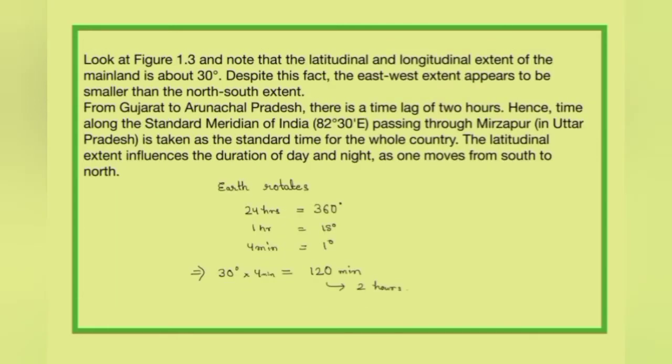Note that both the latitudinal and longitudinal extent of the mainland is about 30 degrees. India's latitudinal extent is from 8°4'N to 37°6'N — a difference of about 30 degrees. Similarly, the longitudinal extent from 68°7'E to 97°25'E is also about 30 degrees. This is an important fact to remember.